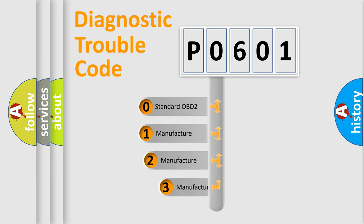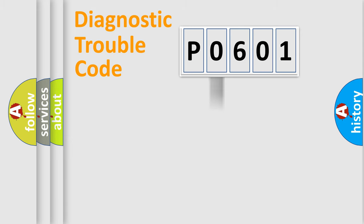If the second character is expressed as zero, it is a standardized error. In the case of numbers 1, 2, or 3, it is a more prestigious expression of a car-specific error.